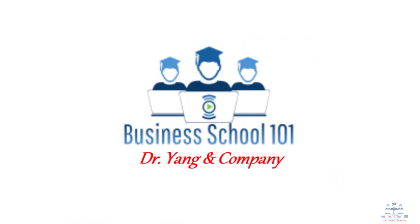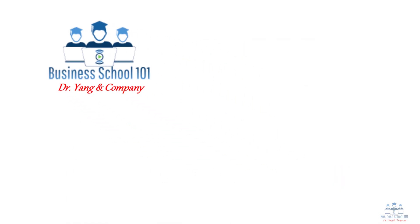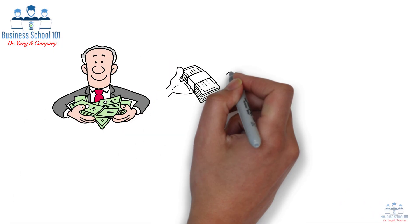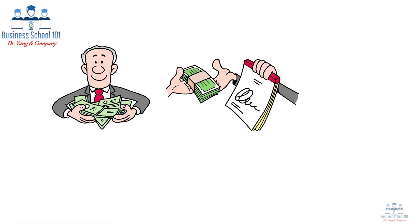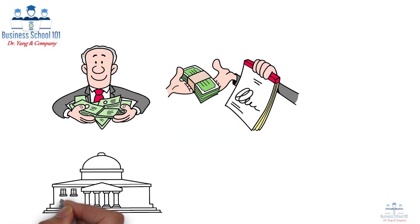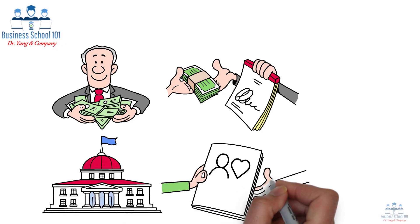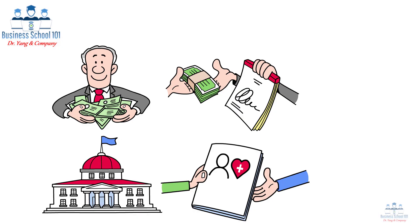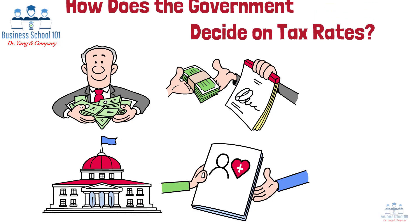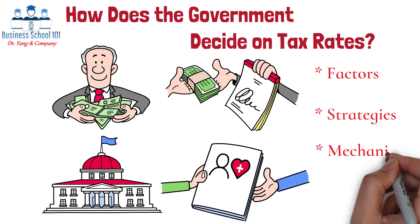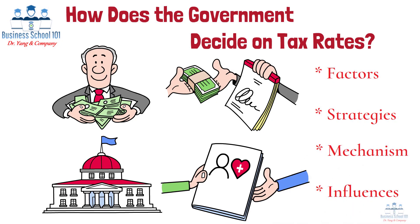Hello everyone, welcome to Business School 101. Imagine you're running a business or earning a paycheck. You're probably familiar with the idea of taxes — you pay them to the government, and in return, the government provides services like roads, schools, and healthcare. But have you ever wondered how governments decide what tax rates to set, what factors they consider, and how they balance raising enough revenue without harming the economy? In this video, I will discuss these questions with you.